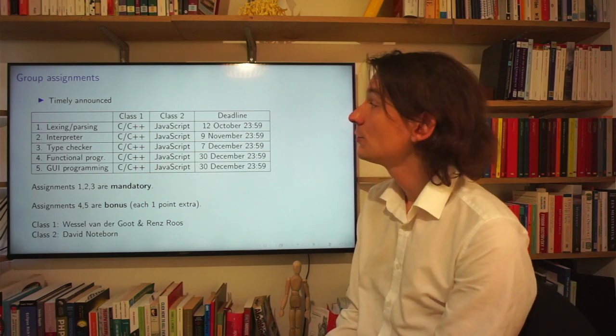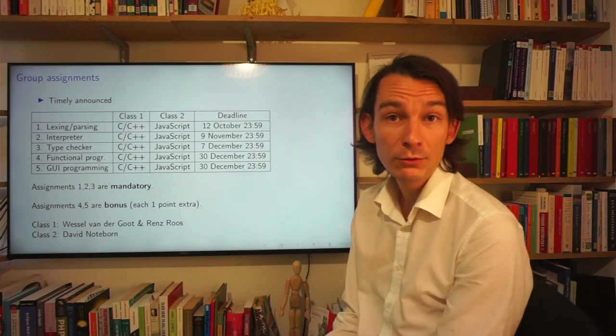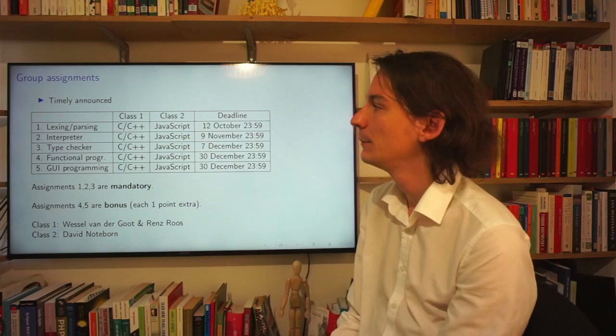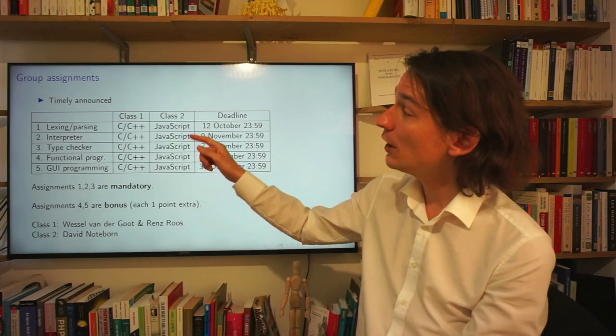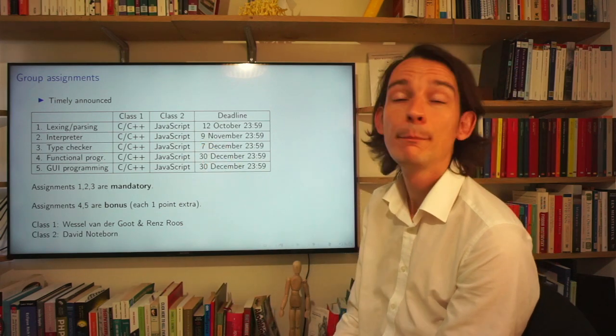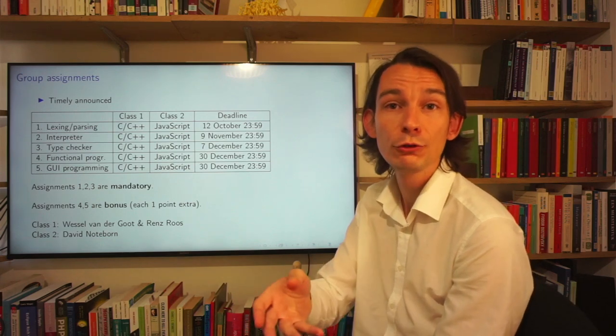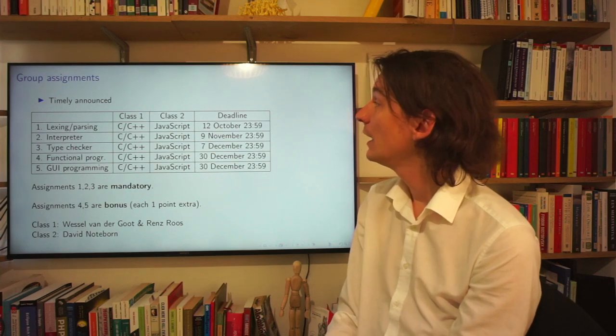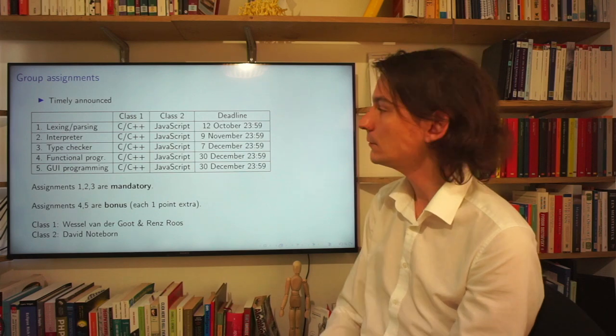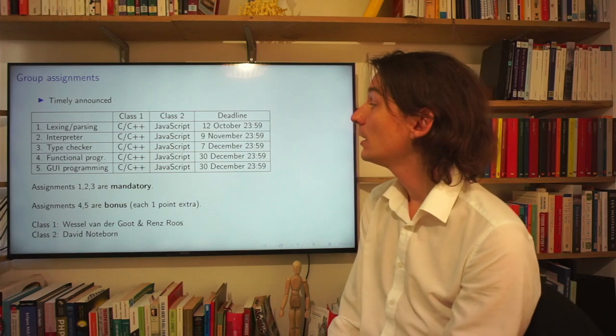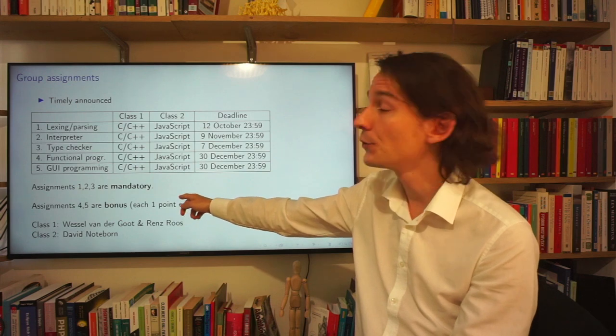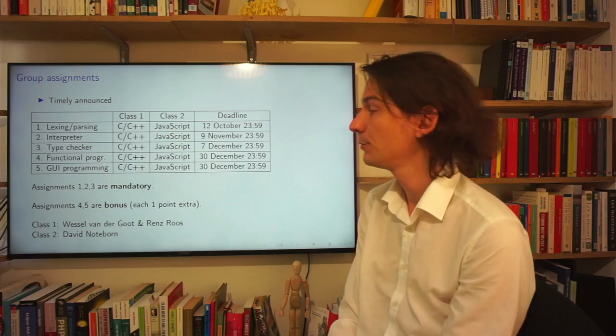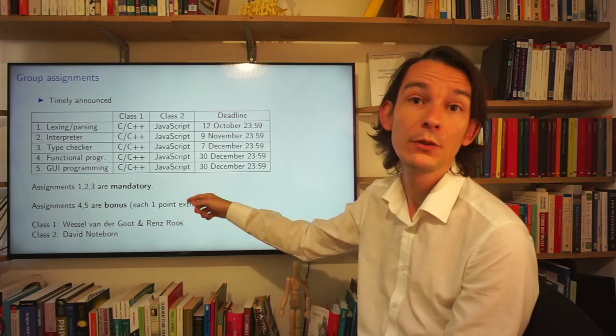The group assignments are timely announced, and here you get an idea of what the topics of these assignments are. So, the assignments 1, 2, and 3 are mandatory. So, with your group that you have formed during the first lab, you can work on these assignments. And the deadlines are over here. Now, as I already explained, you can continue working on assignments 4 and 5, but these are counting as bonus points. Also, 4 and 5 are completed with your group.